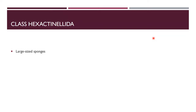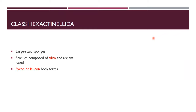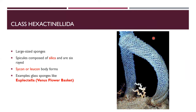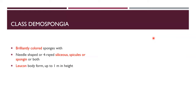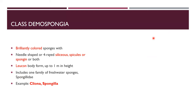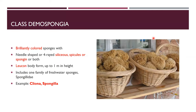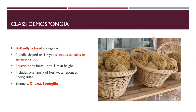Class Hexactinellida: large sponges with siliceous spicules having six rays. Sycon or leucon body forms. Example: Euplectella, known as the Venus flower basket. Class Demospongiae: brilliantly colored sponges with needle-shaped or four-rayed siliceous spicules. Leucon body form up to one meter in height. Includes the only family of freshwater sponges. Examples: Cliona and Spongilla.